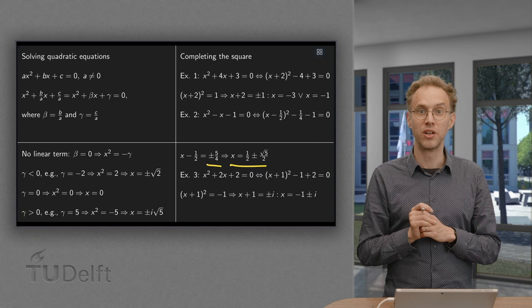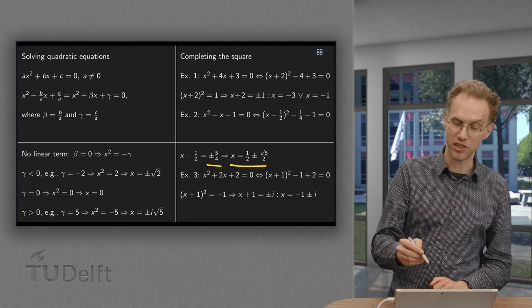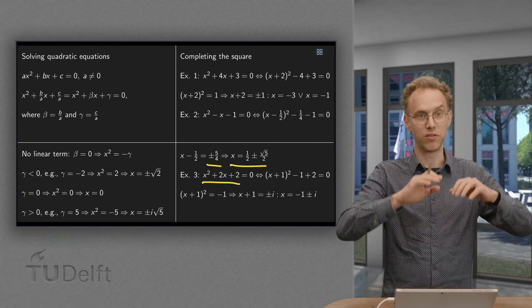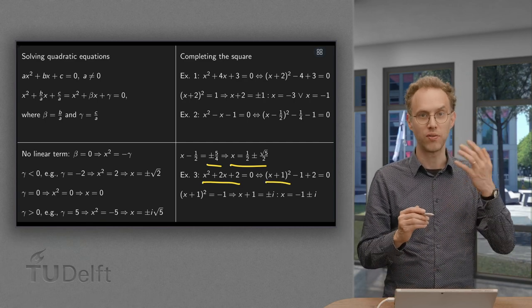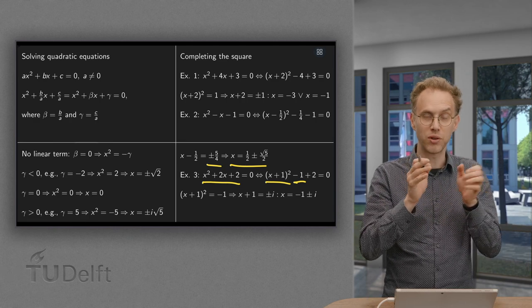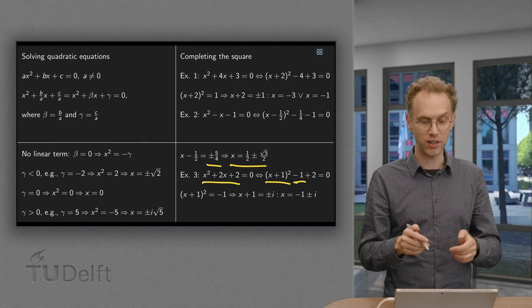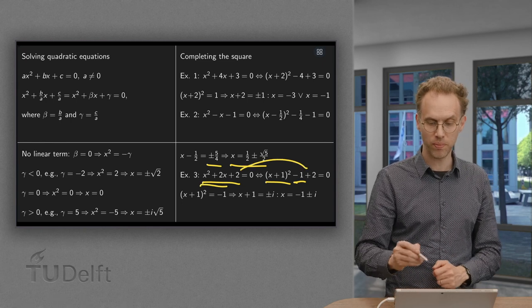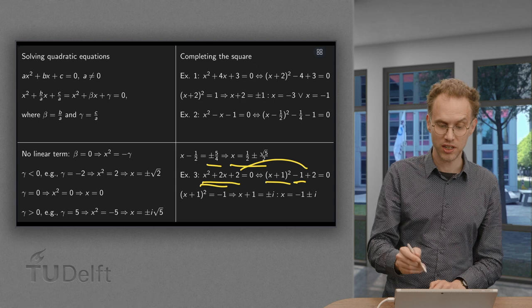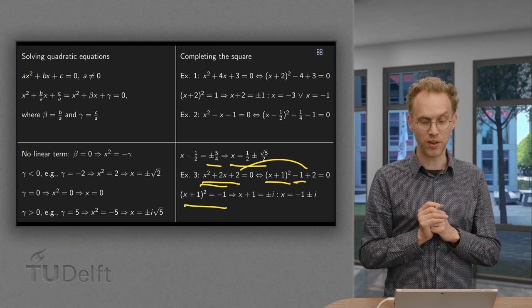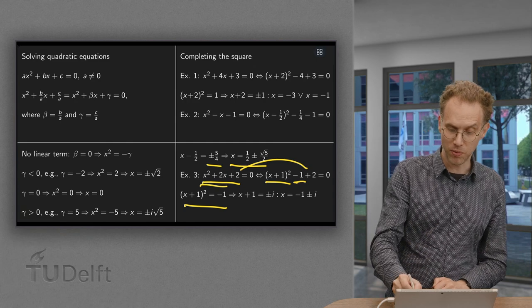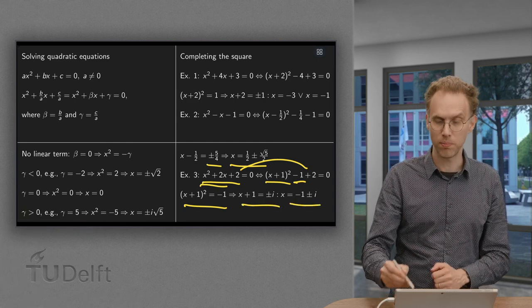Until now we have had real solutions. What happens if we get something negative on the right-hand side? Take the example x squared plus 2x plus 2 equals 0. Since x squared plus 2x equals x plus 1 squared minus 1, we copy the plus 2 to get x plus 1 squared equals minus 1. So something squared equals minus 1, meaning something equals plus or minus i. Therefore x plus 1 equals plus or minus i, giving x equals minus 1 plus or minus i.